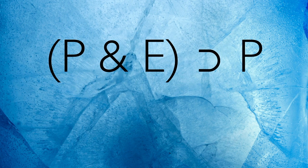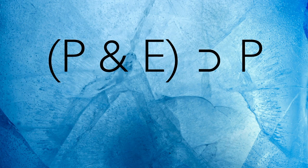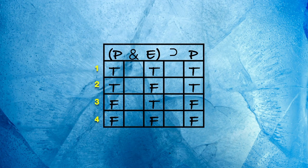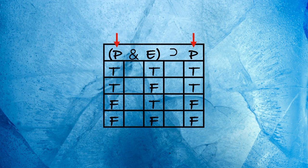Pop quiz. How many rows do we need for our truth table? The answer is just four. We only have two different letters here, P and E. When a letter appears more than once, it must have the same distribution of truth values underneath it.